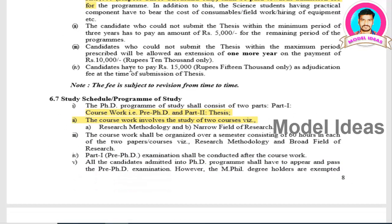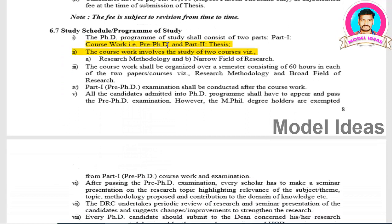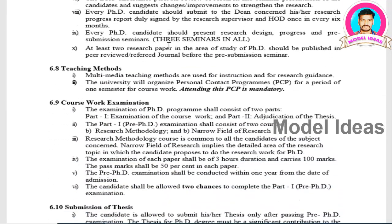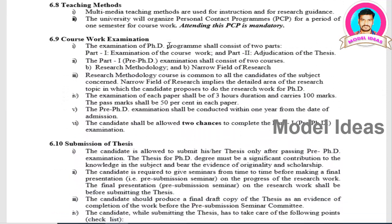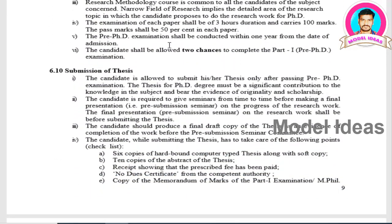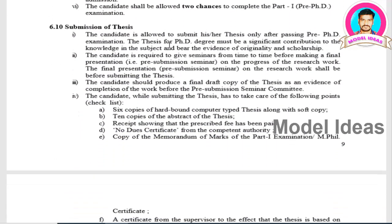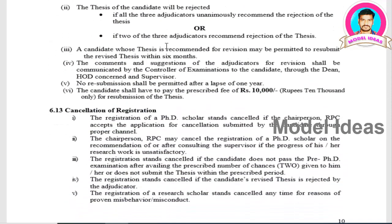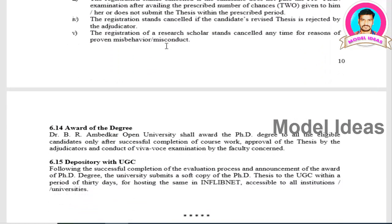The PhD is also divided into two parts: Part 1 is the coursework and Part 2 is thesis writing. Once you complete your thesis, you submit it to the department or your guide, after which there is a VIVA examination. If you qualify in the VIVA examination, you will be awarded your doctorate PhD.